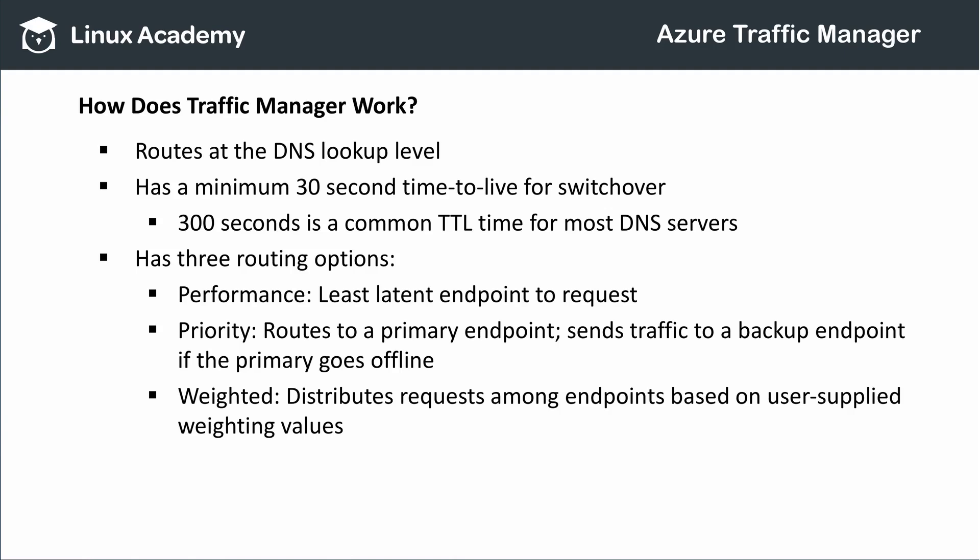There are three means of routing traffic in Traffic Manager. Performance Routing will send a request to whichever endpoint performs fastest for the client. For example, if I have a Traffic Manager with web app endpoints in East U.S., North Europe, and Japan East, and the client is in Korea, that client will get the Japan East version. A client in Mexico gets East U.S., and a client in France gets the North Europe web app.